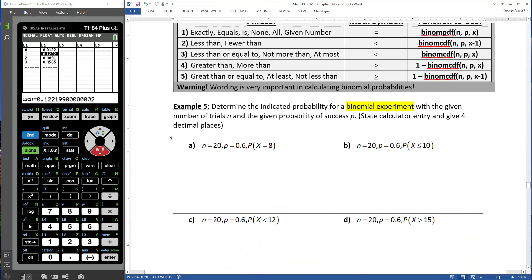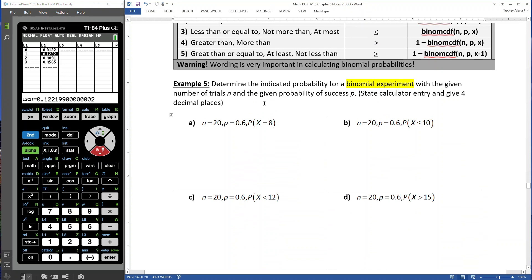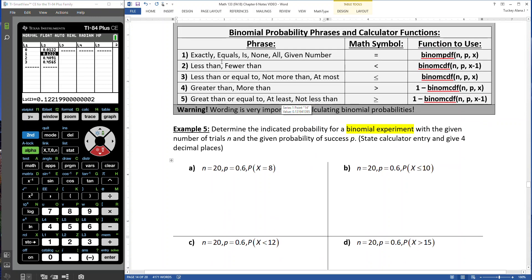We are going to determine the indicated probability for a binomial experiment with n=20 and p=0.6. In letter a, we're asked to find P(x=8). That's the probability that x is 8. Looking at my rules, the probability of x equals a number means I'm going to use rule number 1. So probability x equals 8, when we get lazy we write it as P(8), would be binomial PDF according to this rule.